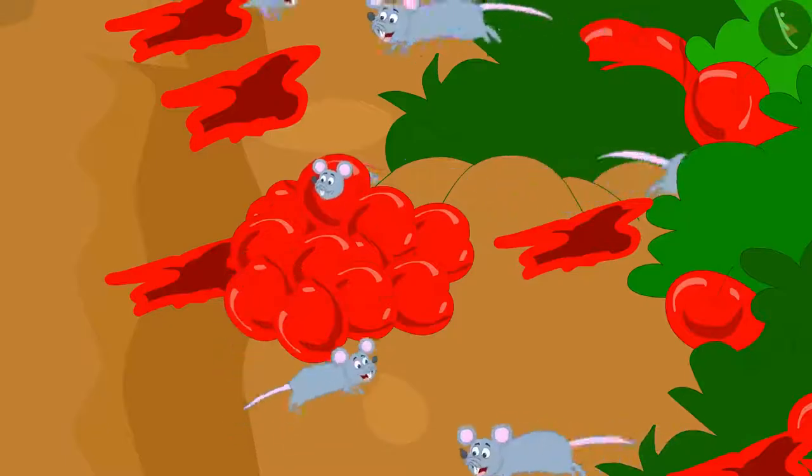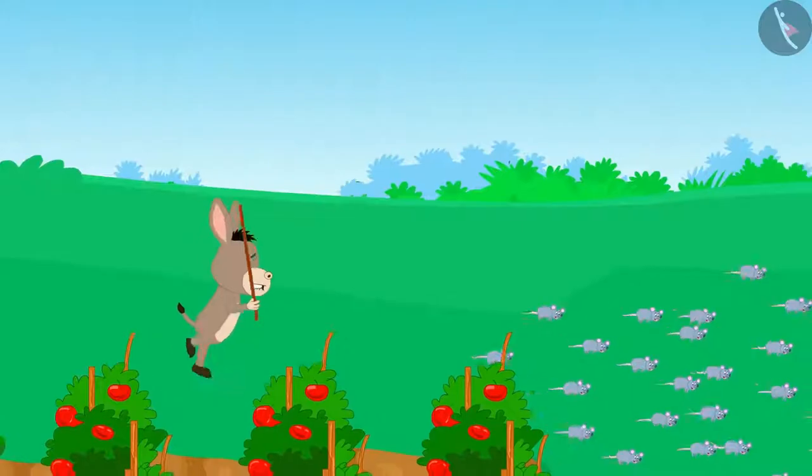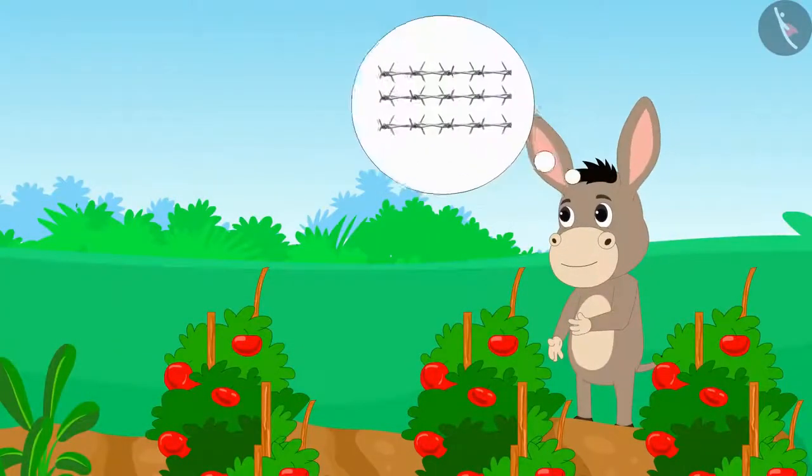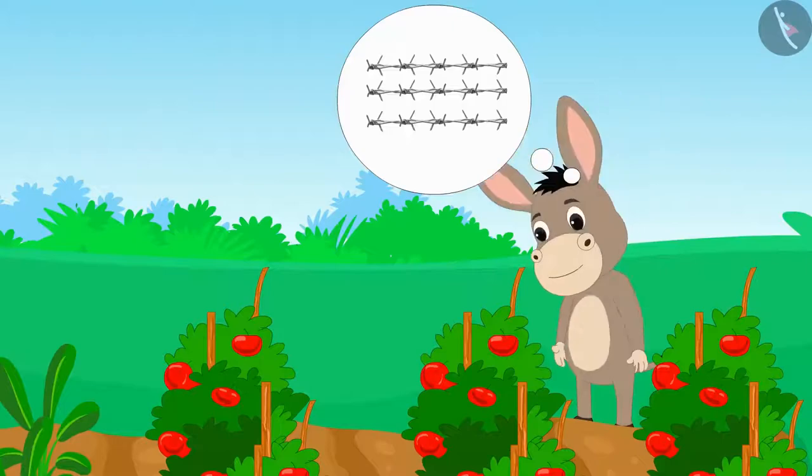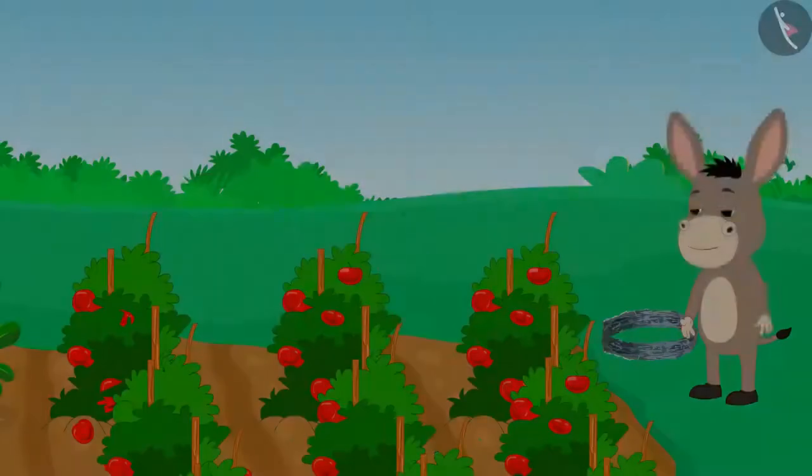Those mice were eating Bhola's tomatoes with great interest. Bhola drove the mice away and thought that he would make a barbed wire fence around his farm. He immediately brought the barbed wire from the market.